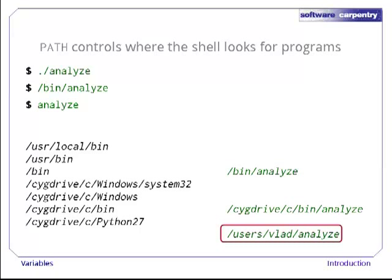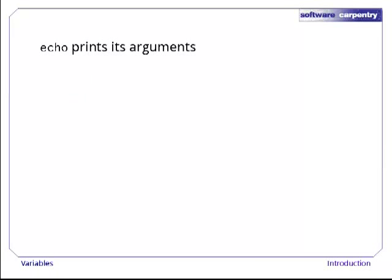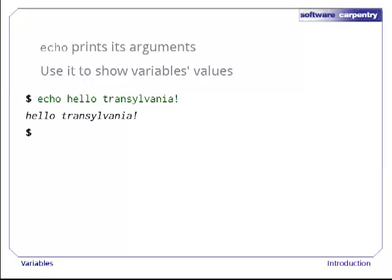Before we explore variables any further, let's introduce one more command: echo. All it does is print out its arguments. This doesn't sound very exciting, but we can use it to show variables' values. First, let's make sure it works. Echo 'hello Transylvania' puts 'hello Transylvania' as promised.